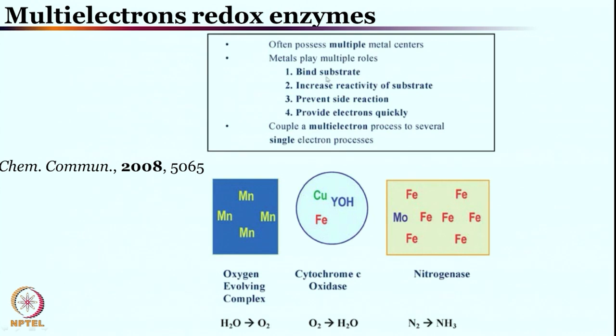Metal plays multiple roles such as binding with substrate — in these cases, oxygen or water. It increases the reactivity of substrate: water binding and water activity will be improved. It prevents side reactions, which is important because these biological processes are completely bulletproof — these reactions happen no matter what. There is one-way, single-product formation only; almost no detour and almost no side product formation. Of course, depending on the concentration of materials things can vary, as we have seen in peroxidase and catalase cases, but otherwise it always prevents side reactions.